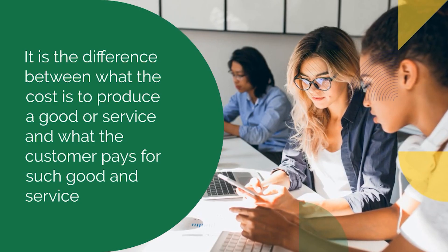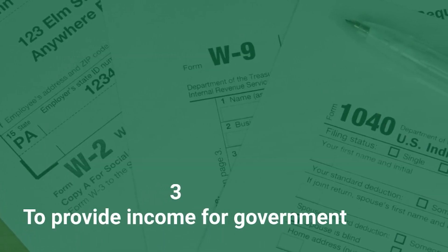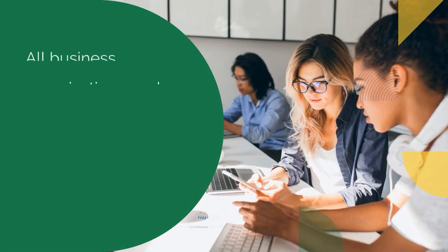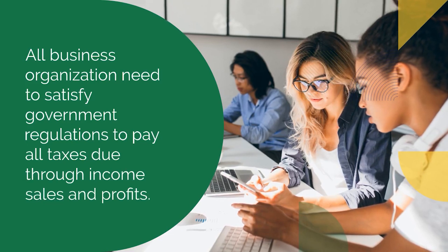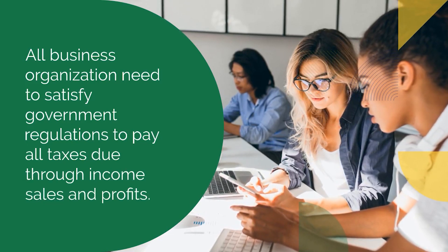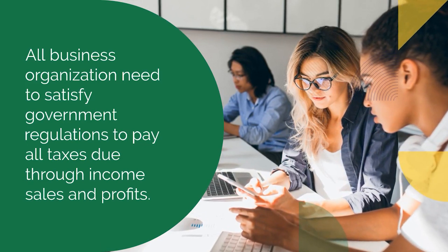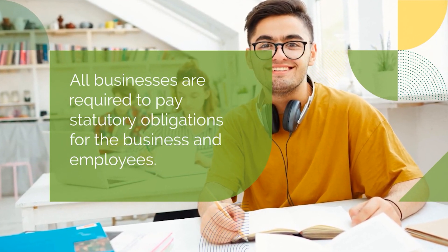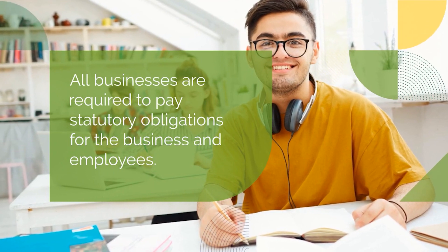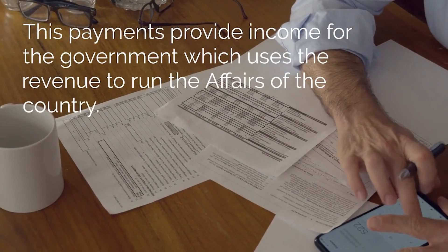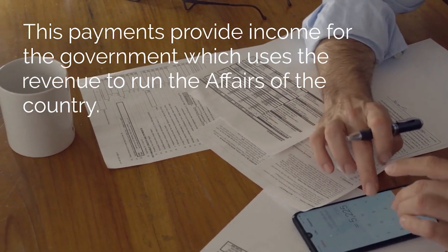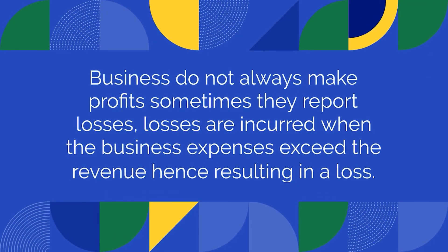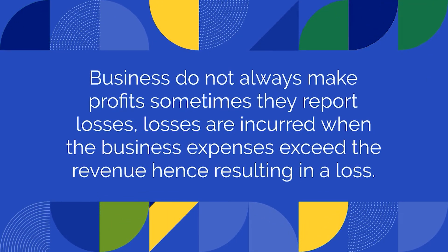Number three: to provide income for government. All business organizations need to satisfy government regulations and pay all taxes due through income, sales, and profits. All businesses are also required to pay statutory obligations for the business and employees. This payment provides income for the government, which uses the revenue to run the affairs of the country. Note that businesses do not always make profits — sometimes they report losses, which are incurred when business expenses exceed revenue.